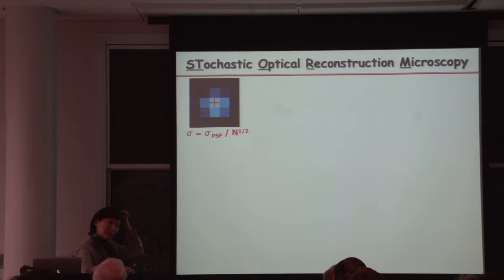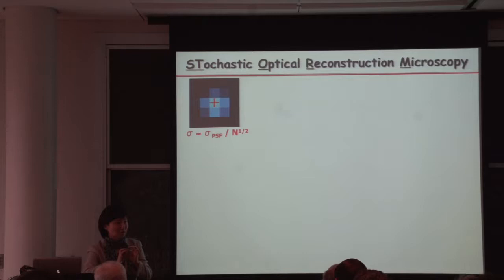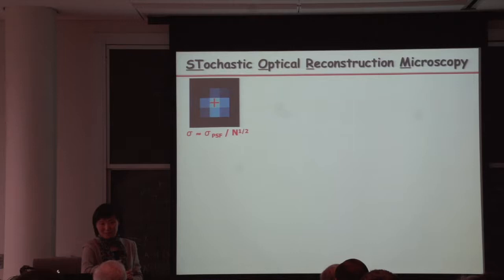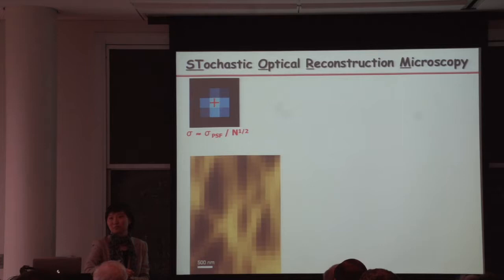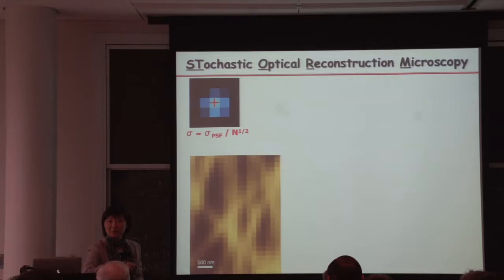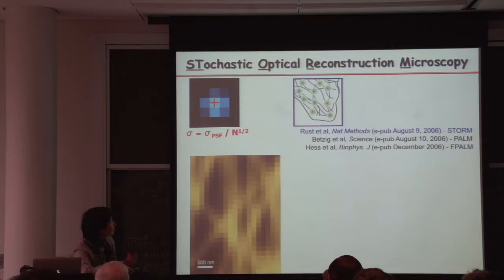However, localization alone doesn't break the diffraction limit, because the diffraction limit arises when multiple molecules have overlapping images. You need well-isolated single molecule images to pinpoint a central position. When you have one molecule, Gaussian fitting finds the central position easily. For two you could fit two Gaussians. But if you don't know how many there are — potentially hundreds of thousands or millions — fitting millions of Gaussians fails catastrophically due to noise propagation. The question is: how do you find positions of individual molecules when their images heavily overlap? That's the essence of the diffraction limit, and that's where we came in.